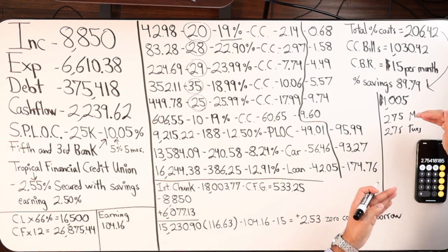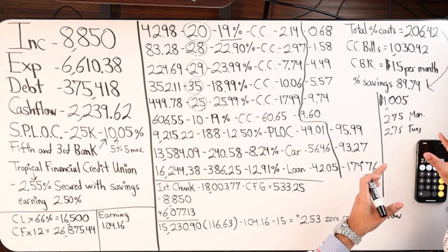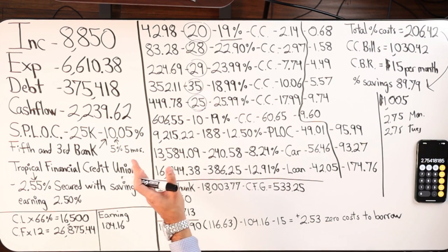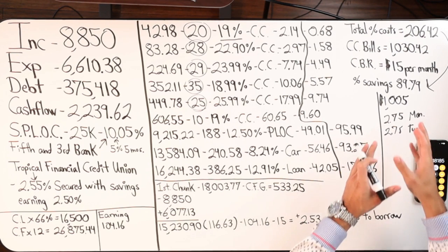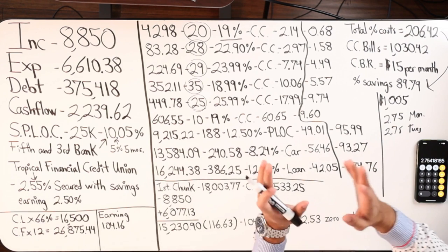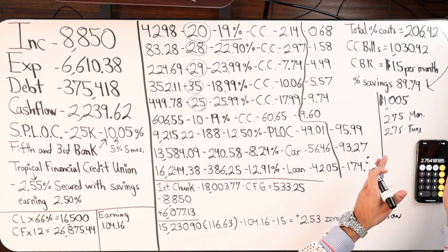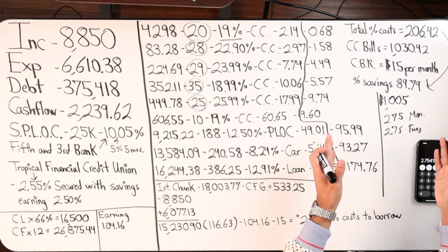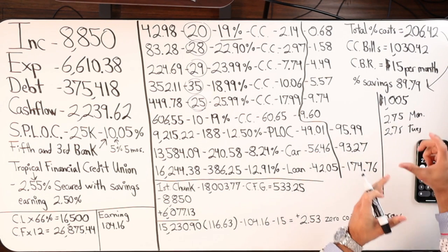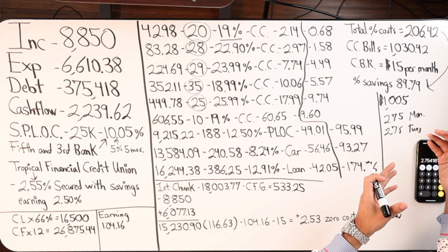Now, that same language, the banks sometimes confuse us because they use the same language and they'll say that this PLOC is simple interest compounding daily. But when you run the math, when you actually have a line of credit, and I can prove this.